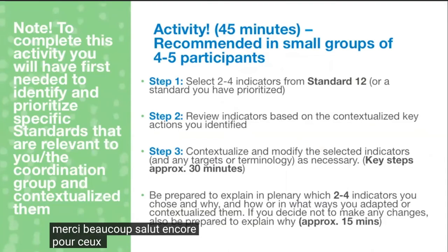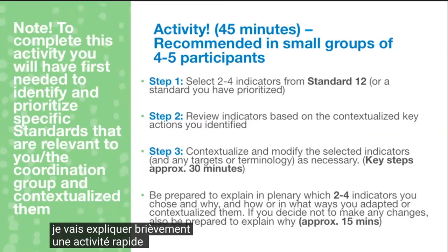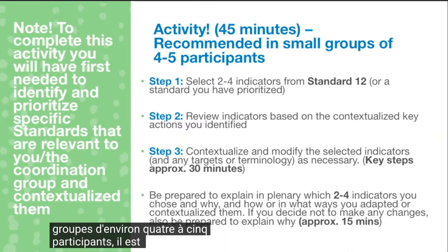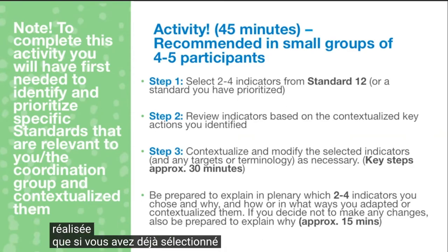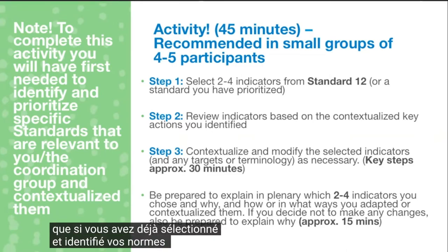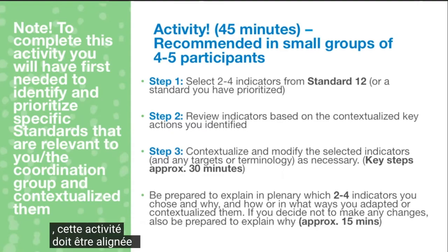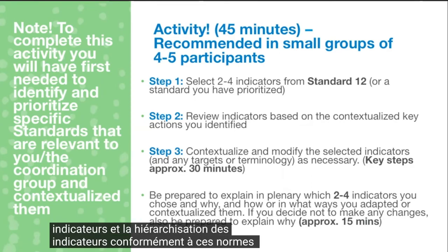For those wanting to do an activity — if this is a contextualization action workshop — I will briefly explain a quick activity of about 45 minutes, recommended to be done in small groups of about four to five participants. Please note that this activity should be completed only if you have already selected and identified your priority standards that you will be contextualizing with the wider child protection coordination group. The activity should be aligned with selecting and prioritizing indicators in line with those priority standards.